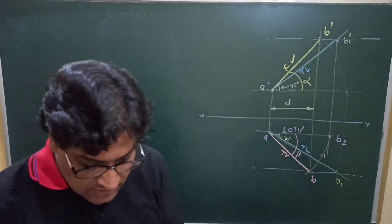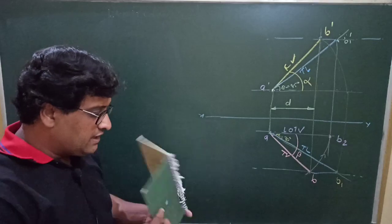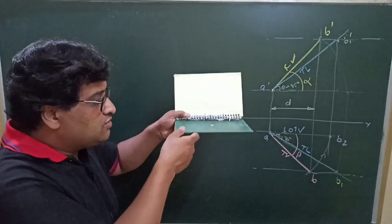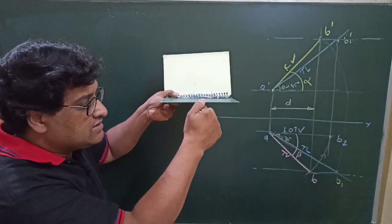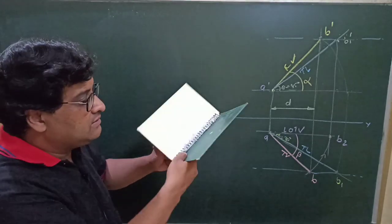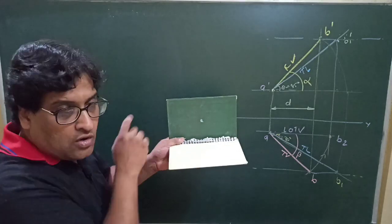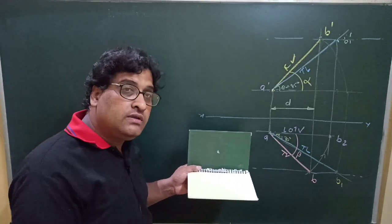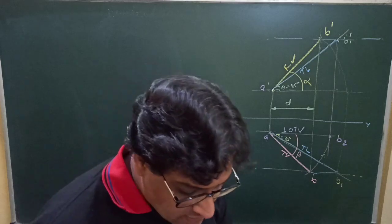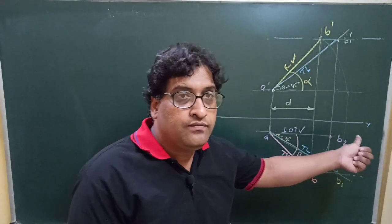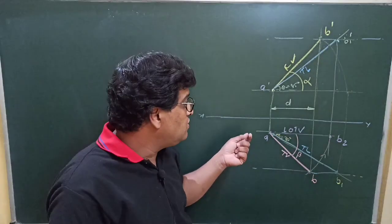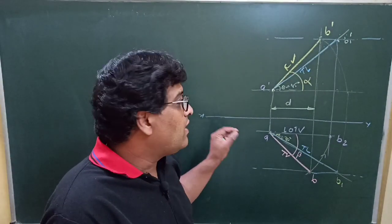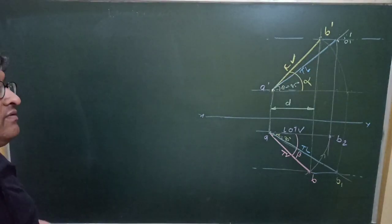Now there are things to be remembered. A point which is on HP — say for example this point, this is HT — its front view will always be on the XY line, because if you look from this side, this point is always on the HP, so it lies on the XY line. A point which is on VP — if you see from top, the top view of the point will be on the reference line itself. So for HT and VT, one of the views will always be on the XY line and another view we have to find out. For vertical trace, the top view is always on the XY line, while for horizontal trace the front view is always on the XY line.